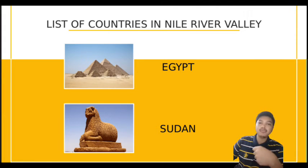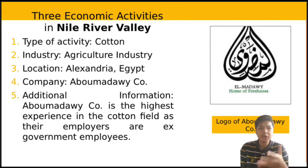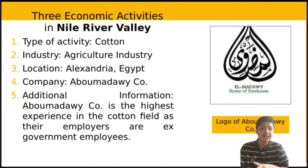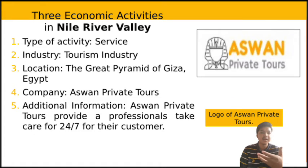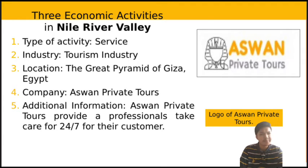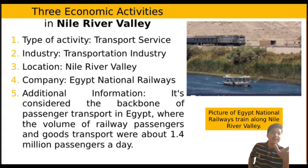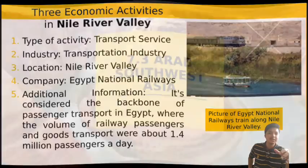In the Nile River Valley region, consisting of Egypt and Sudan, there are three economic activities. First, agriculture activity located mainly in Alexandria, Egypt, managed by the Abu Madawi company. Second, a service activity in tourism, occurring at the Great Pyramid of Giza in Egypt, managed by As-One Private Tours. Third, transport services under the transportation industry along the Nile River, managed by Egypt National Railways.